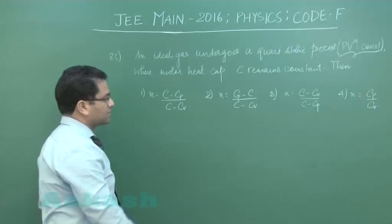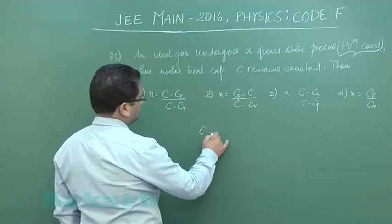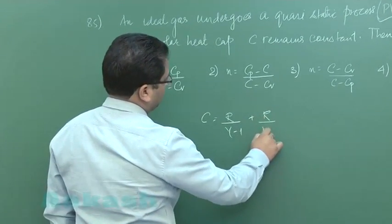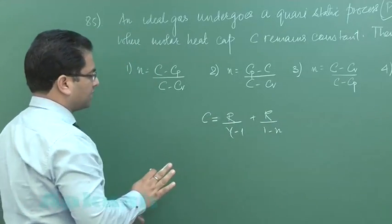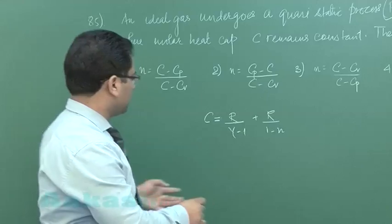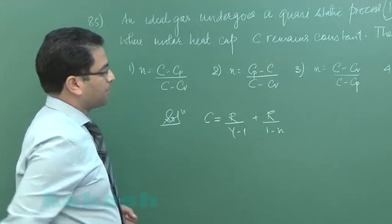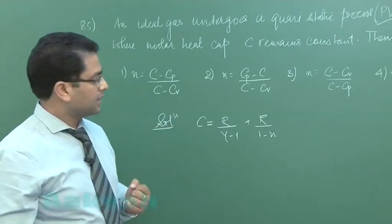Now if that's the situation, we need to calculate the value of n. It requires some information and a bit of calculation, so it's not an easy scale of question. C is R by gamma minus 1 plus R by 1 minus n. This comes from a formula which can be derived, but generally during practice time you must have derived this equation—the molar heat capacity of a polytropic process.